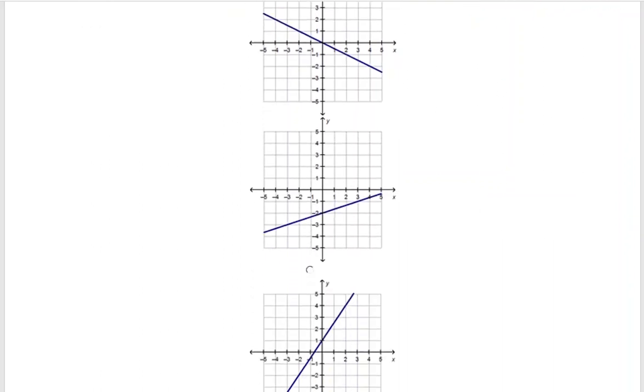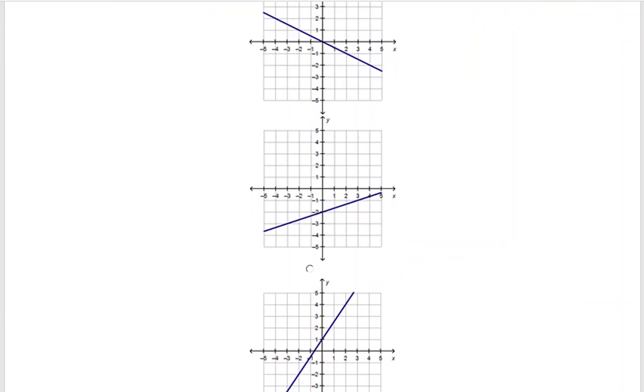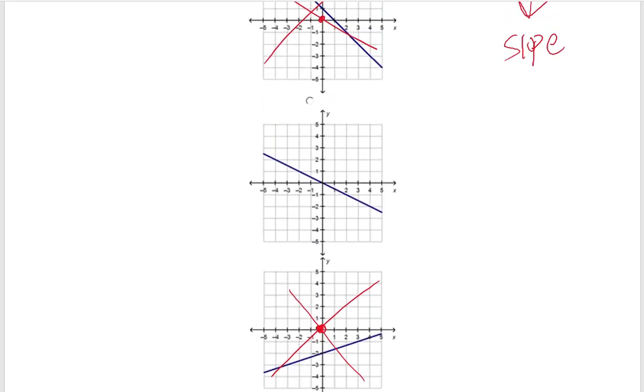If we look at the other options, which one of these goes through 0, 0? Only one of these goes through 0, 0. It is not that one, it is not that one. I'm looking at the origin to see if it goes through that. This is the graph that shows a line going through the origin.